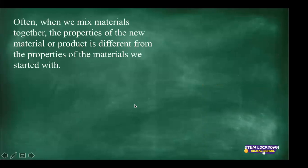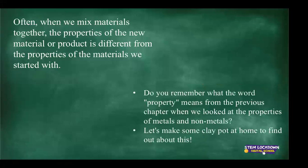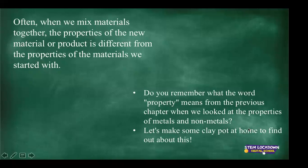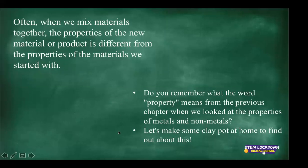Often when we mix materials together, the properties of the new material or product are different from the properties of the materials we started with. Do you remember what properties were involved in metal or non-metal? Properties of metal include: metal is shiny, metal is strong, metal is ductile. Non-metal is dull. Bricks also have their own properties: bricks are durable, bricks are strong, bricks are big, bricks are heavy.